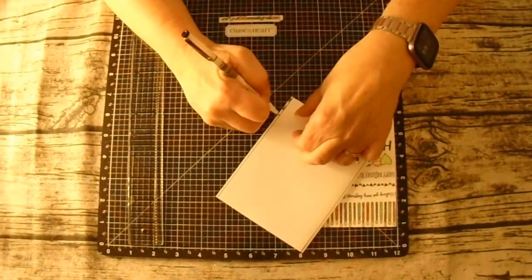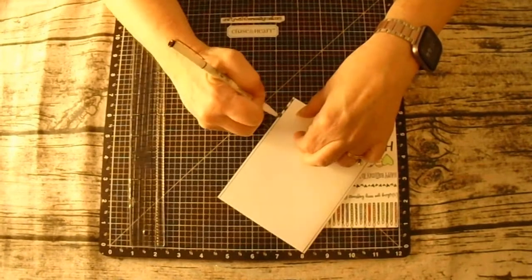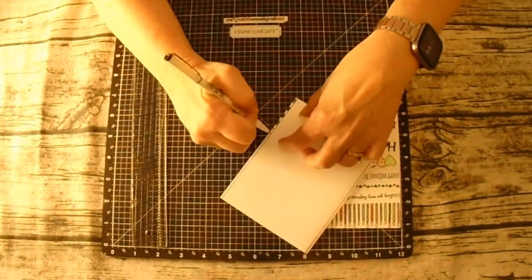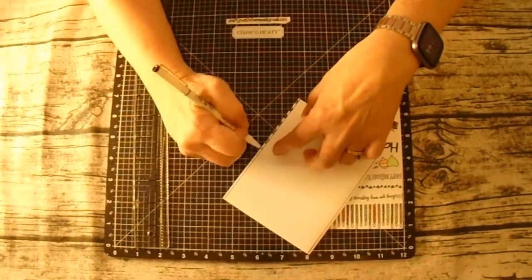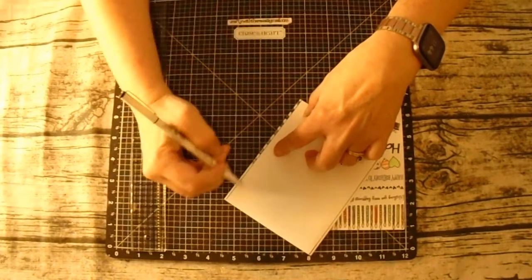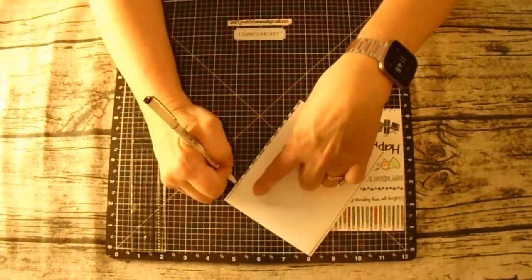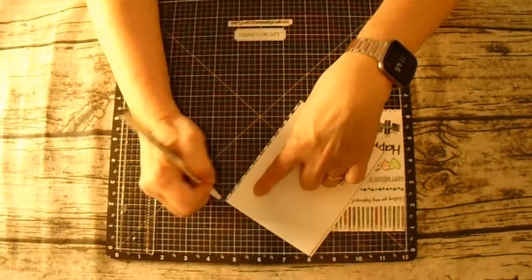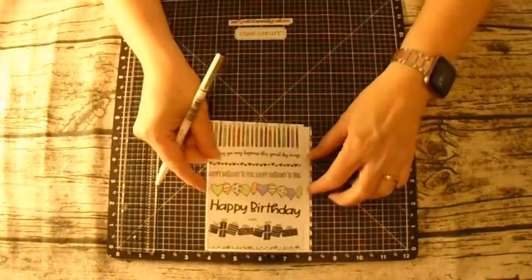Now here comes the fun part. I'm coloring in some notches to make it look like a video reel, just adding some fun to the side of the card.